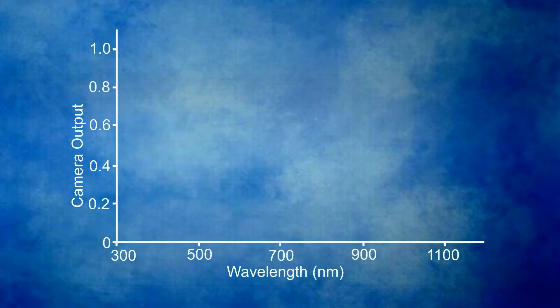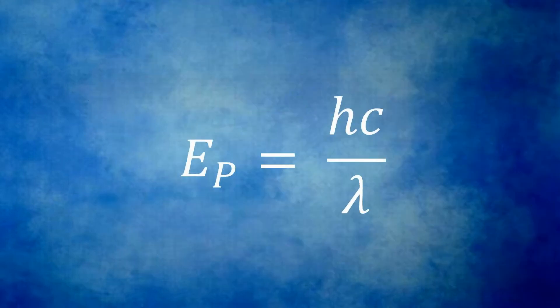You will see quantum efficiency specified for many image sensors in many cameras. My experience shows me that what I want is actually a plot of camera output as a function of wavelength for a constant level of light energy. This is the responsivity, or more correctly, the spectral responsivity of the camera. Recall from the videos on optics that we have a formula that gives us the energy of a photon as a function of its wavelength.